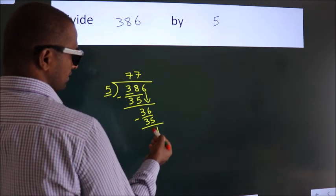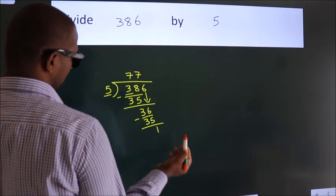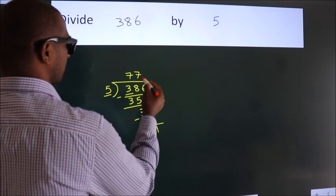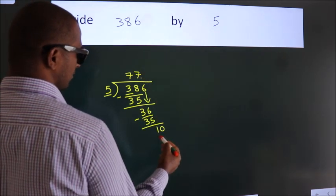After this, no more numbers to bring it down. So, what we do is, we put a dot and take 0. So, 10.